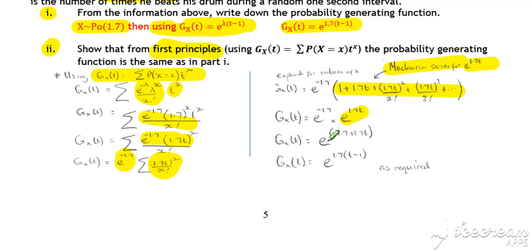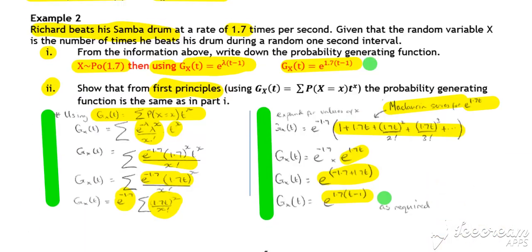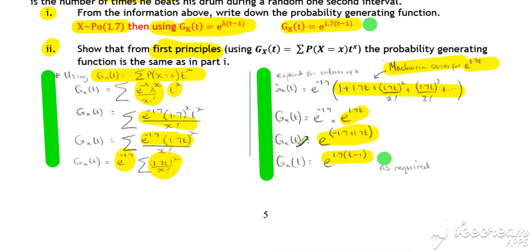We can then use our indices rules to combine our powers and take out a factor of 1.7t to get our answer in the required form, same as above in part one. So, it's a technique to be learnt, okay? You need to basically make sure that you work through and learn the processes for the first principles derivations for each of our distributions. They're all kind of a little bit different and they all require a specific idea. In this case, the recognition of the Maclaurin expansion was key.